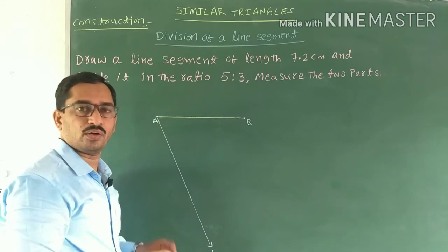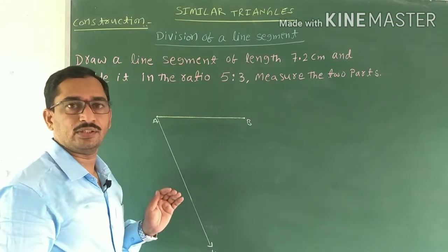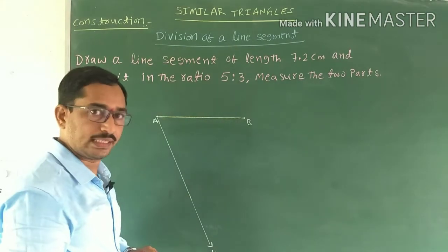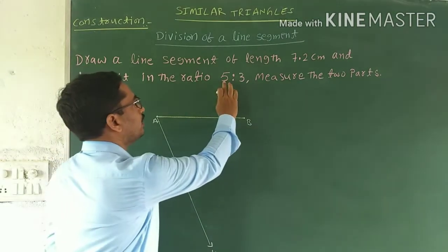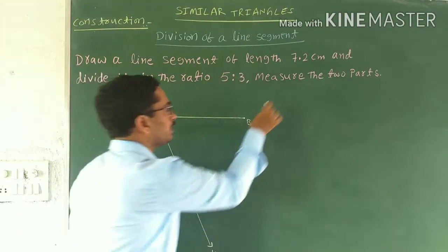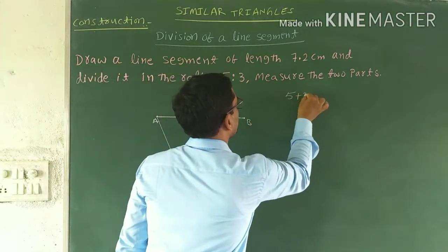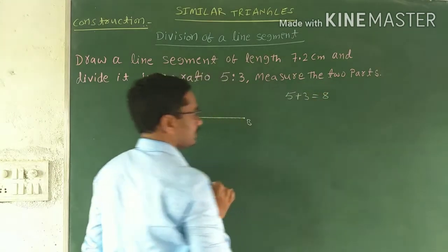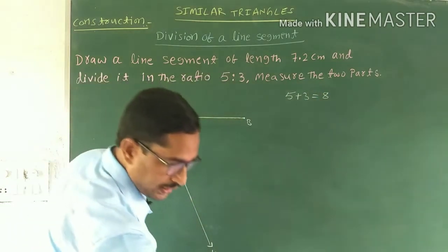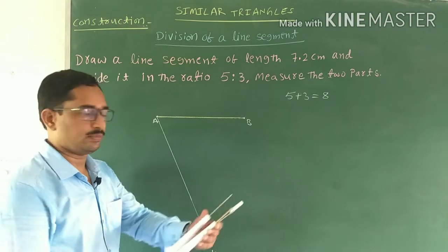Now we have to divide ray AX into 8 equal parts. Why 8 equal parts? See the ratio — the ratio given is 5:3, and 5 plus 3 equals 8. So we have to divide ray AX into 8 equal parts.